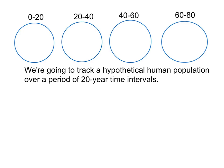Since we're tracking for 20 years, it means that everyone in this group to start with who is still living will be in this group after the 20-year time period. And similarly, everybody in this group who's still living will be in this group and so forth.